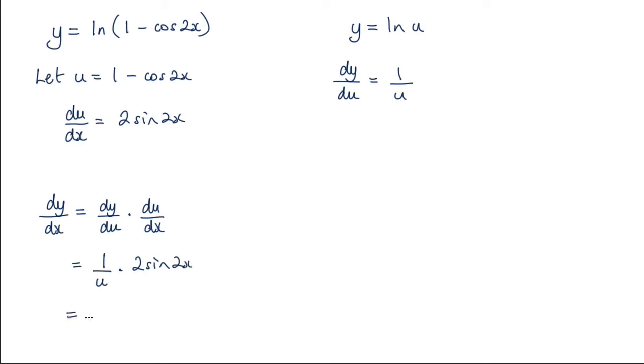I can simplify a little bit here and put back in that substitution for u. I know that u is 1 minus cos 2x, so I end up with 2 sine 2x over 1 minus cos 2x.